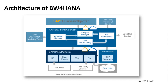The architecture of BW for HANA — basically any warehouse system — has three layers of extraction: data acquisition from sources, then processing and transforming the data, and then making it available for reporting or dumping into another system. That is the basic architecture of any warehouse system, and SAP BW for HANA is no different.